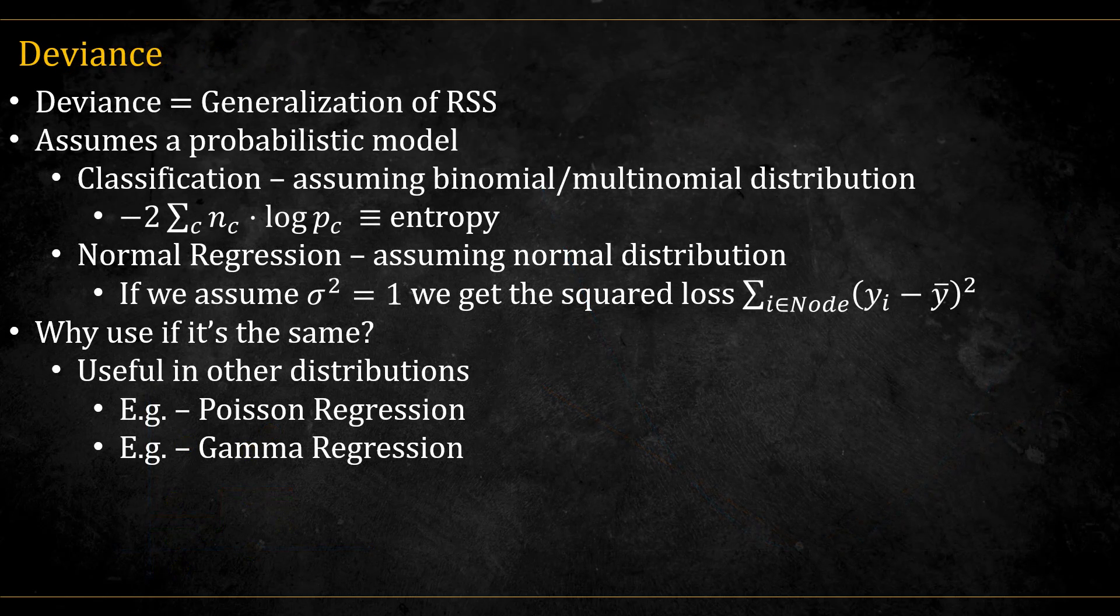Finally, another conceptual way to split which works for both classification and regression is the deviance. Deviance is the generalization of RSS, the residual sum of squares, to all kinds of distributions. I won't get into the concept of deviance here. I have a video that explains it in the context of GLMs, which I will link to this video. The main point is that we assume some probabilistic model. That is, we assume the data is coming from some probability, whose parameters are different between nodes. This is conceptually different from the machine learning approach of simply finding what works the best, but it is actually equivalent to it in the cases shown here.